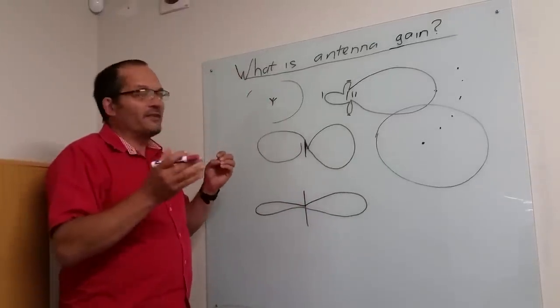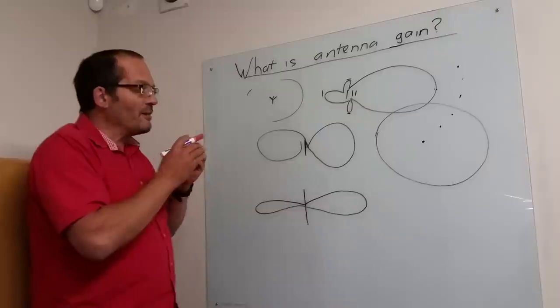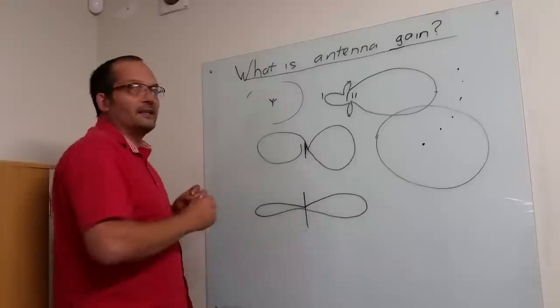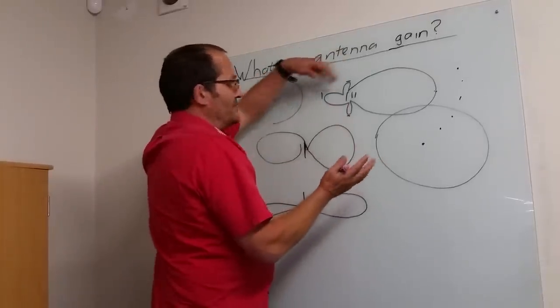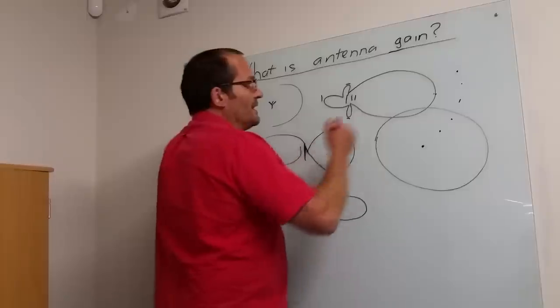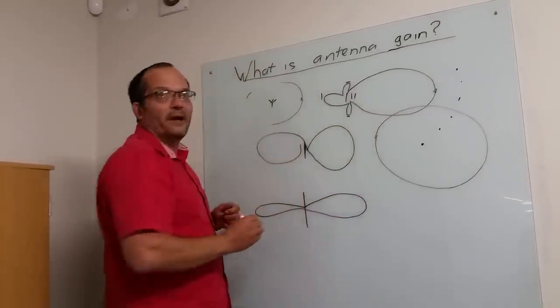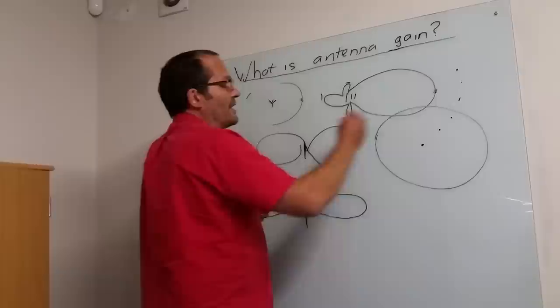Gain is typically a reference to isotropic, so it typically tells you how much more does an antenna radiate compared to a thing that would radiate in all directions. We explained that pattern is like taking that balloon, squashing it. So in this direction, this guy will radiate more power than our isotrope.